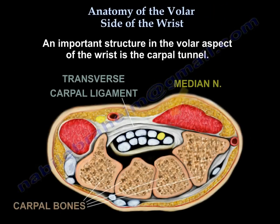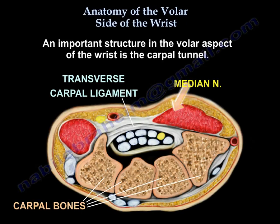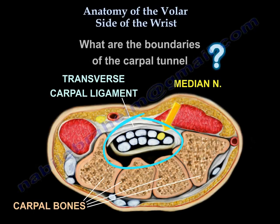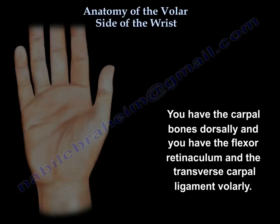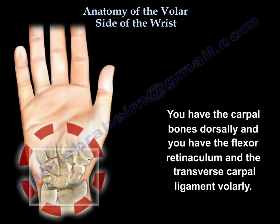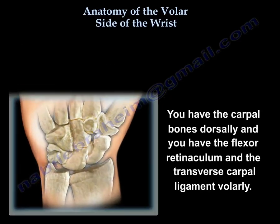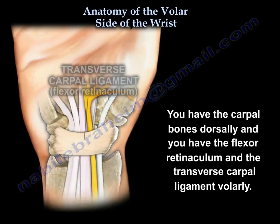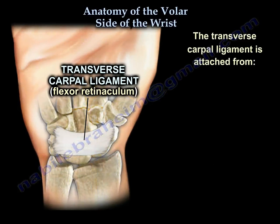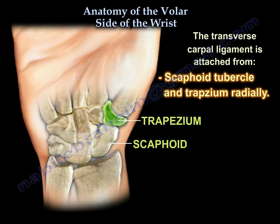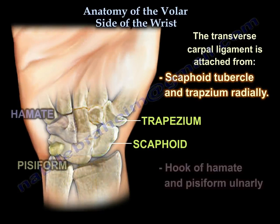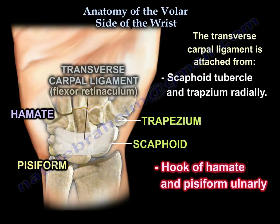An important structure in the volar aspect of the wrist is the carpal tunnel. What are the boundaries of the carpal tunnel? You have the carpal bones dorsally, and you have the flexor retinaculum and the transverse carpal ligament volarly. The transverse carpal ligament is attached from the scaphoid and the trapezium radially, to the hook of the hamate and pisiform ulnarly.